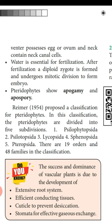Reimers classified pteridophytes into five subdivisions: Psilophytopsida, Psilotopsida, Lycopsida, Sphenopsida, and Pteropsida. There are 19 orders and 48 families in this classification. Among these, Psilophytopsida is a completely extinct group.